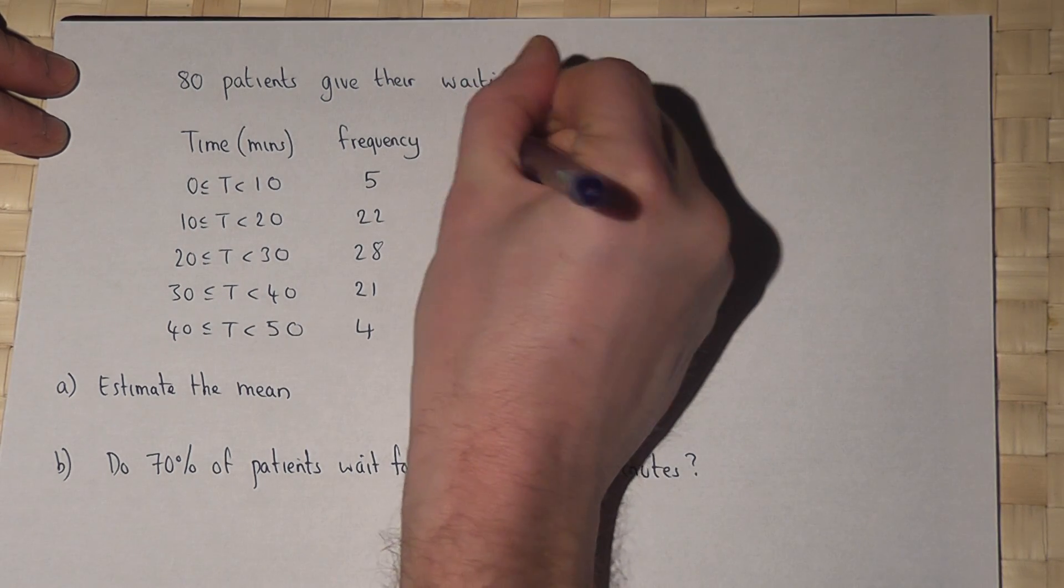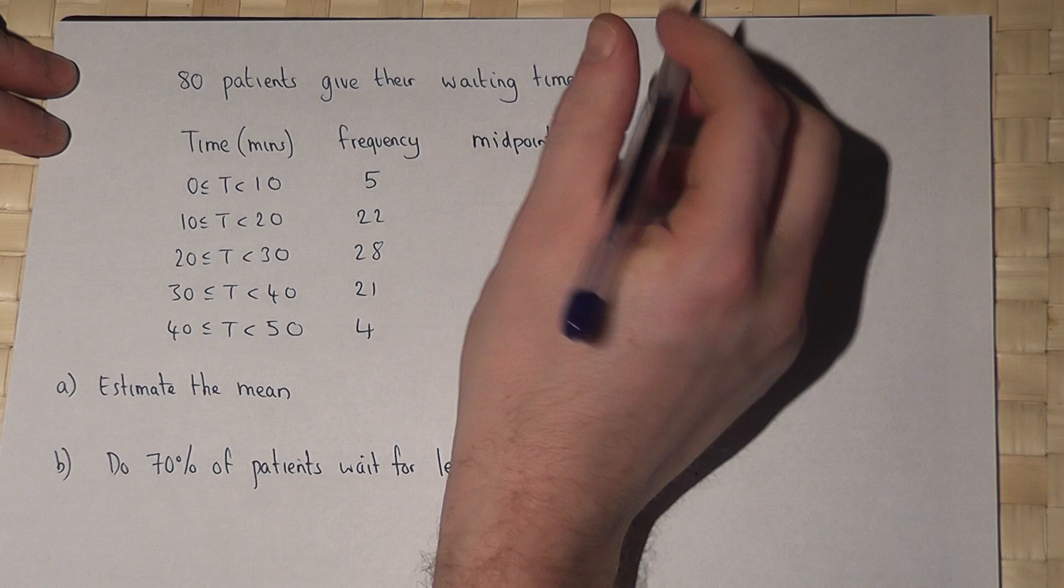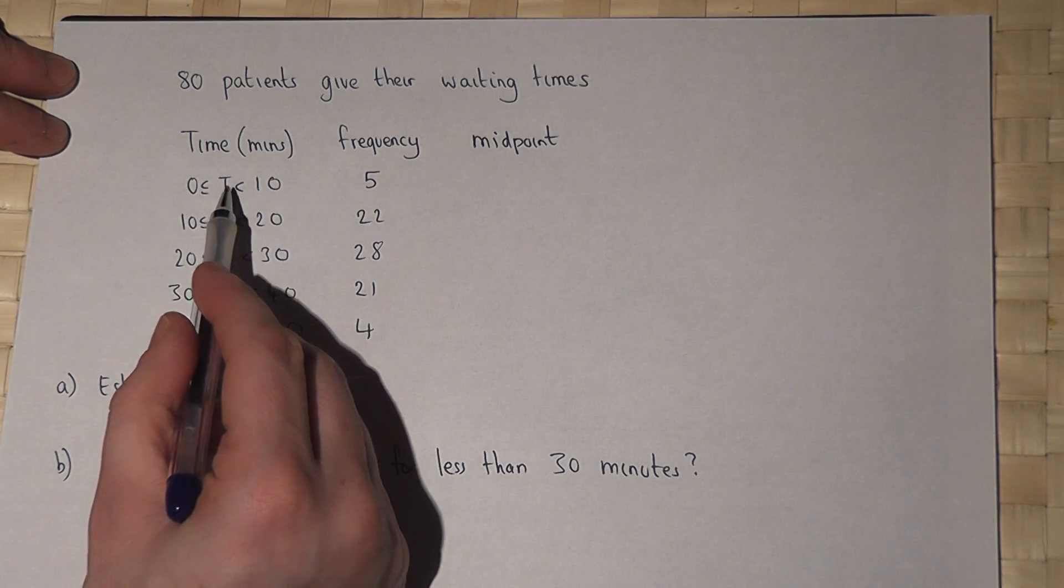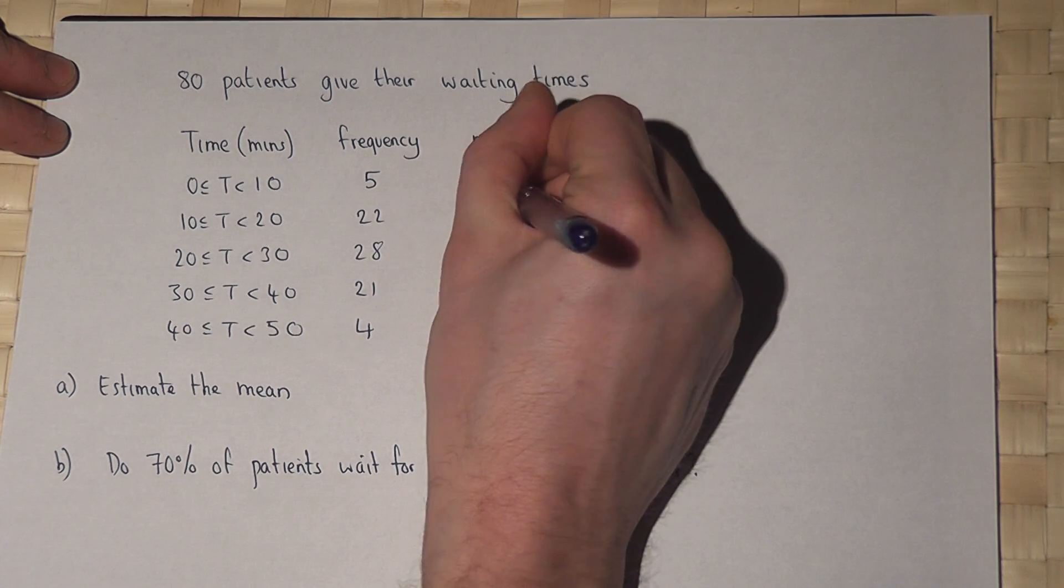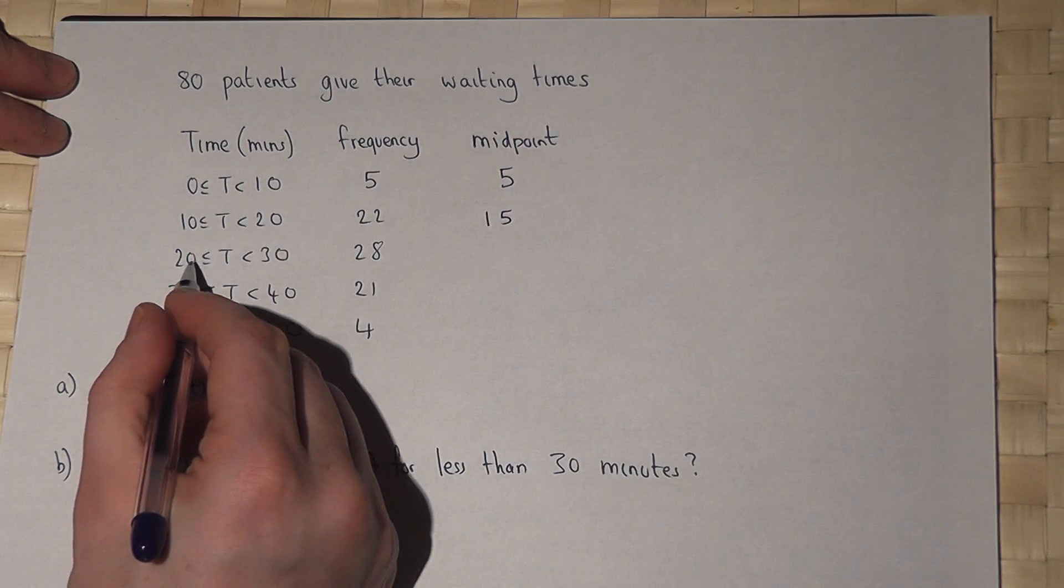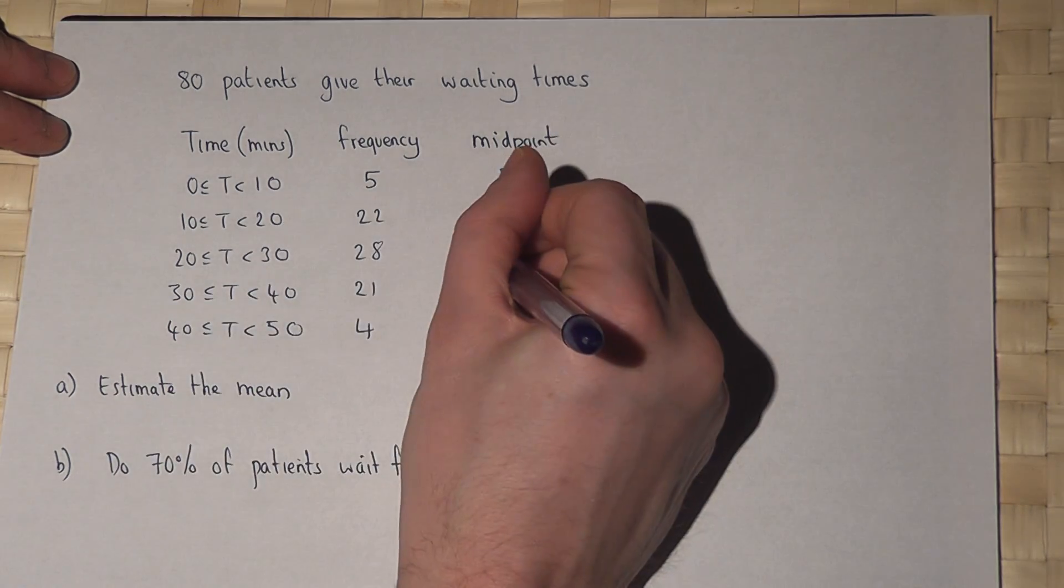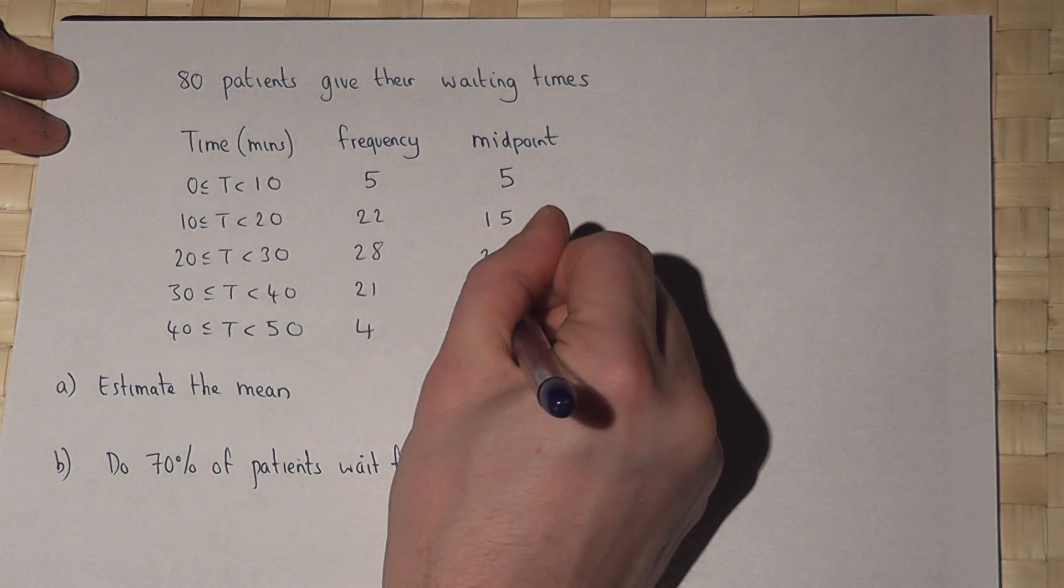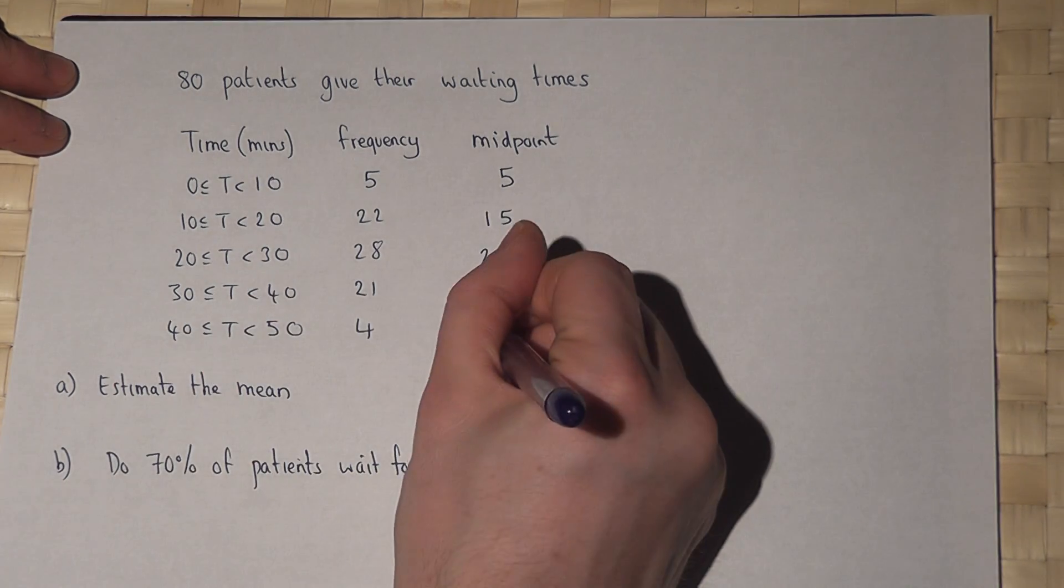Now the first column is the midpoint. So we call 0 to 10 minutes 5 because 5 is the midpoint of 0 to 10. 10 to 20 we call 15, 20 to 30 we'll call 25 minutes, 30 to 40 we'll call 35 minutes and 40 to 50 we'll call 45 minutes.